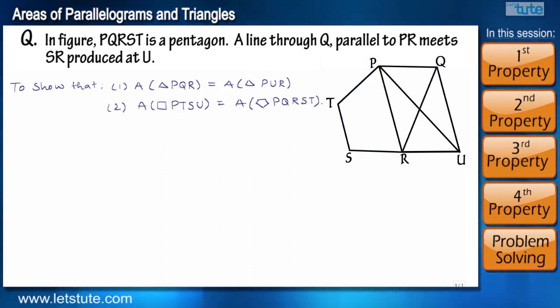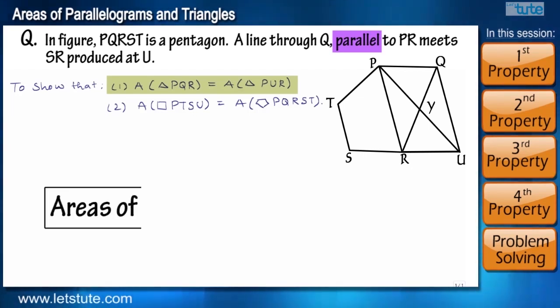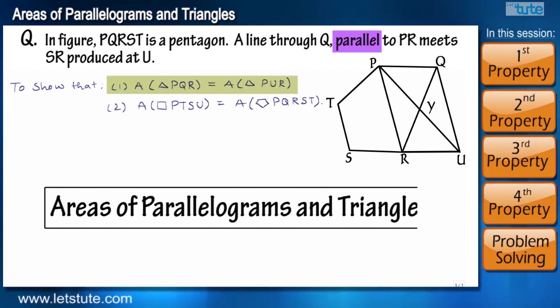Before we start, let's name the point of intersection of PU and QR as Y. Friends, if you look at the question, the question has words like areas of triangles and parallel lines. So by looking at these keywords, you can directly say that the problem is based on areas of parallelogram and triangle chapter.